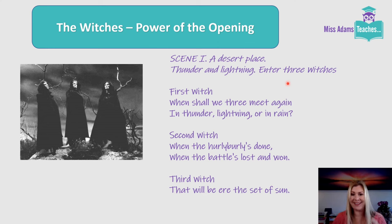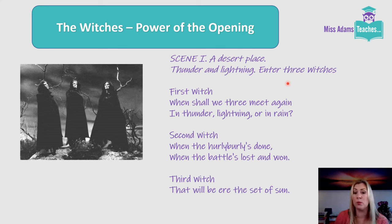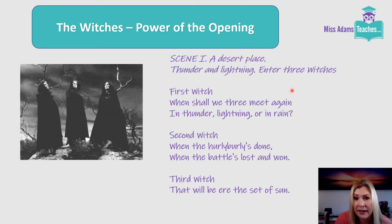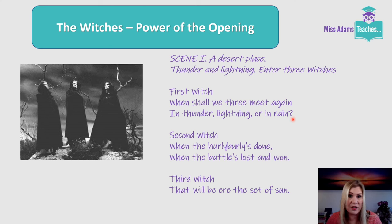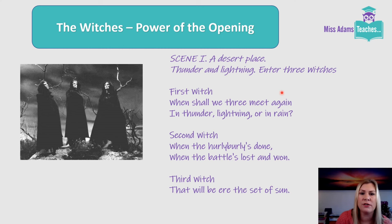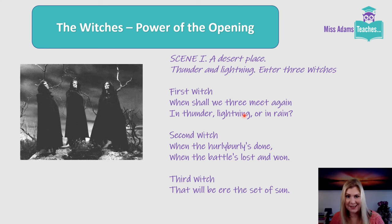The witches come in threes, which is a supernatural number. They all speak in order — first, second, third — and they even use triads in their language: 'in thunder, lightning, or in rain.' Triads, or lists of three, whatever you prefer. Notice the way that pathetic fallacy is re-emphasised again here — they will meet in thunder, lightning, or in rain.